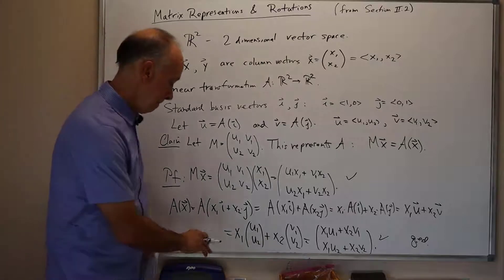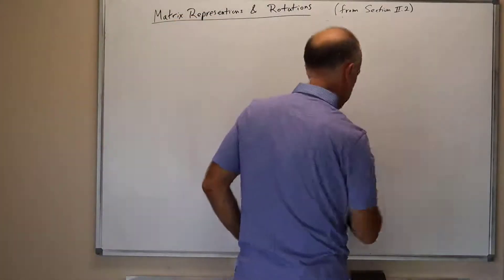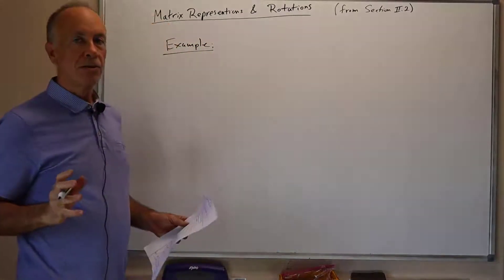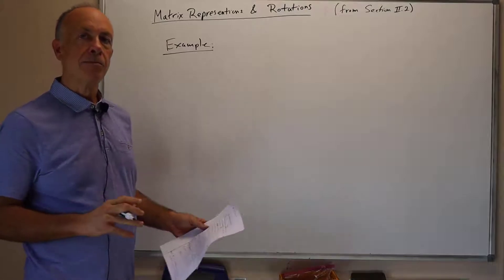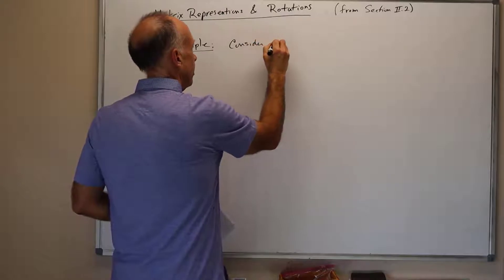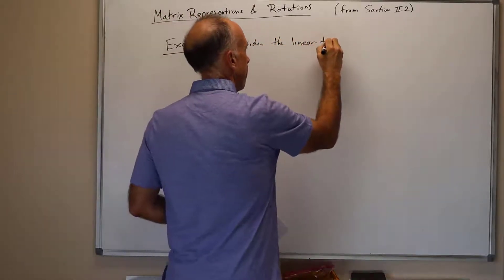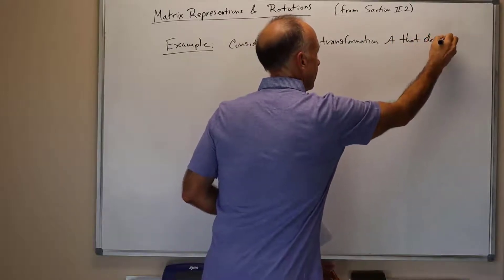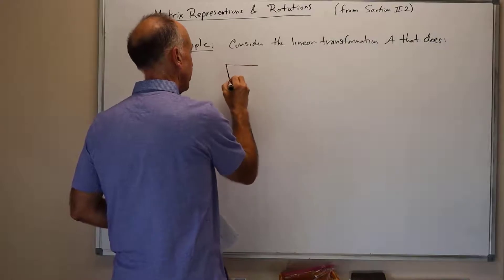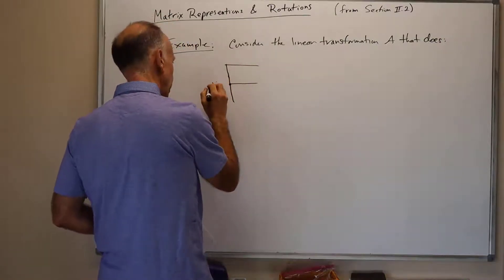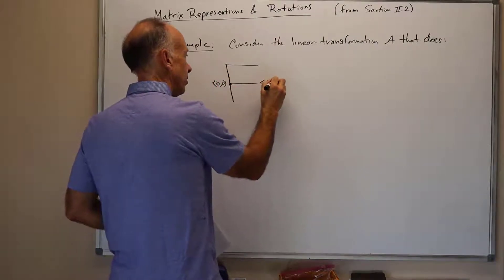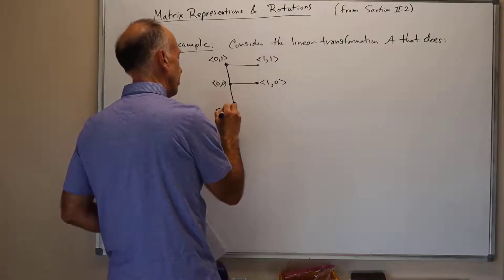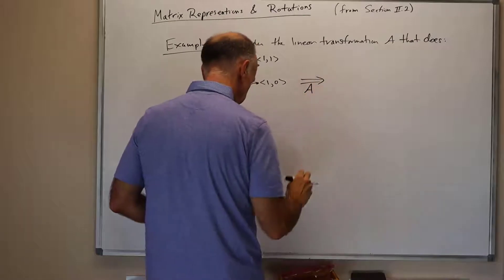Let's do a quick example. For this example I'm going to show the action of A as it transforms an F shape and then we'll build the matrix from it. Consider the linear transformation A that takes the F in standard position. This was the F sitting on top of the xy axes. Here's the origin, 0, 0. Here's 1, 0. Here's 0, 1. 1, 1. And 0, minus 1.